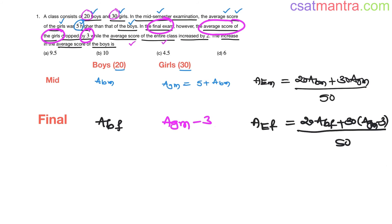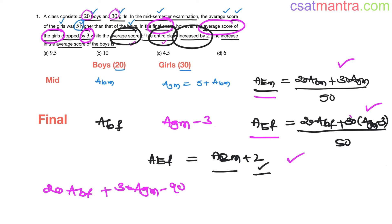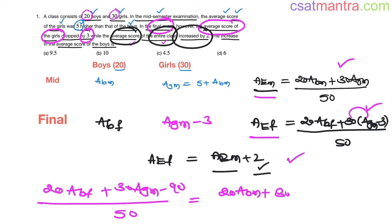It is said that the average score of the entire class is increased by 2 in the final examination. So the average of the class in the final examination is AEM plus 2. Let's substitute: AEM equals (20·ABM + 30·AGM) / 50. So we get: (20·ABF + 30·AGM − 90) / 50 equals (20·ABM + 30·AGM) / 50 plus 2.